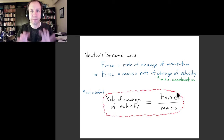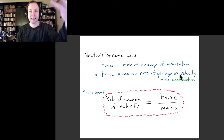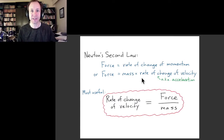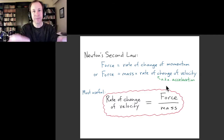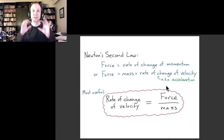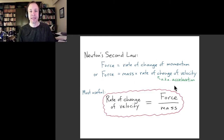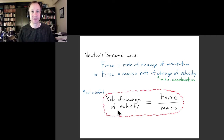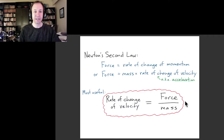The most useful way to express Newton's Second Law is one that emphasizes its predictive power: the rate of change of velocity equals the force divided by the mass. This means if you know the force acting on an object and the object's mass, you can predict how the velocity will change. We're about to do an example where we go through exactly that.